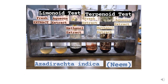These are the results of terpenoid test and limonoid test from Azadirachta indica, which is the neem tree. For the limonoid test, the aqueous extract of fresh sample and the aqueous extract of dry sample are both giving negative results, while the methanol extract is giving a positive result. For the terpenoid test, all the tests are negative — no grayish color appears in any test tube. So in Azadirachta indica, the methanol extract gives a positive limonoid test, while terpenoid tests are negative.